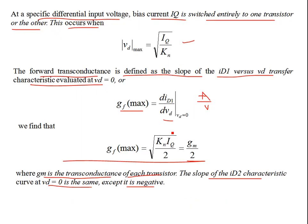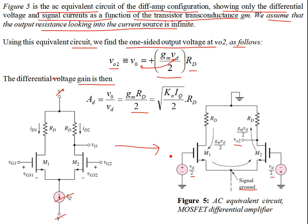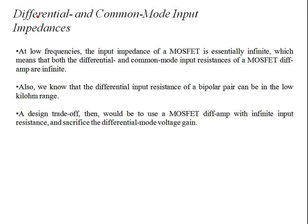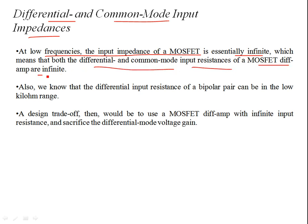The differential gain AD = −GM × RD / 2, where GM = √(2KN × IQ). At low frequencies, the input impedance of MOSFETs is essentially infinite due to the gate capacitance, which means both the differential and common-mode input resistances of MOSFET differential amplifiers are infinite.